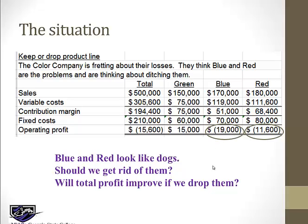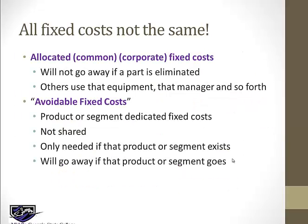So should they get rid of blue and red? Would their total profits increase by the $19,000 and the $11,600 if they ditched them? It's a common misconception to think that if you get rid of a product line, you're going to get rid of all the costs of that product line — because some of those costs are allocated.